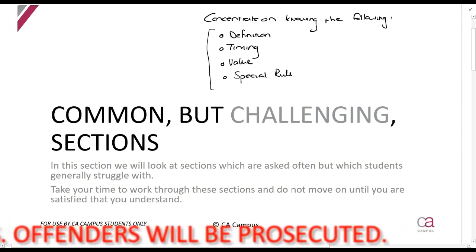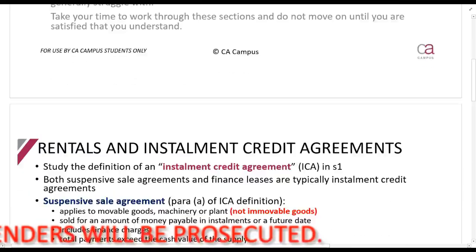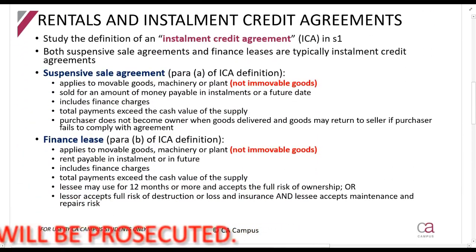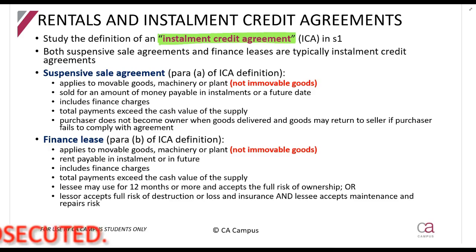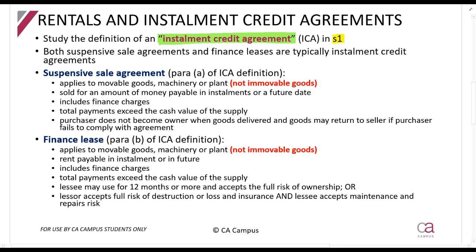You need to be able to discuss under those headings the different sections. The first thing we are talking about will be rentals and installment credit agreements, and we are going to start specifically with installment credit agreements. There is a definition for that in Section 1 of the VAT Act. This has been asked in PSICA ITC and PSICA APC quite recently, so it is an important section. The VAT Act in Section 1 gives us two distinct situations: the first is a suspensive sale agreement, and the second is a finance lease. Both are considered installment credit agreements.